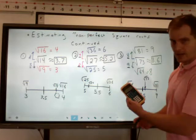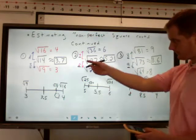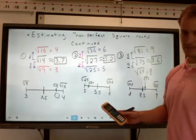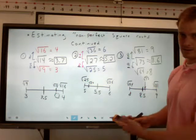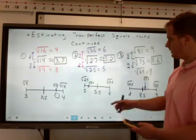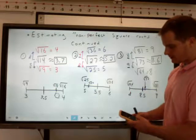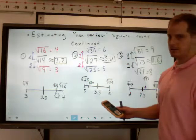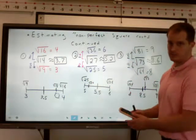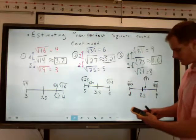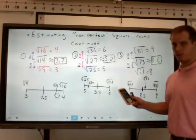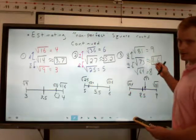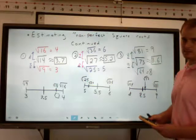If you were to use a calculator, the first problem, if you did the square root of 14, you get about 3.741. So, 3.7, or 3 and 7 tenths is good. For number 2, if you take the square root of 27, you get about 5.196. So, again, 5.2, or 5 and 2 tenths is reasonable. And lastly, the square root of 73, you actually end up with 8.544. So, again, something larger than 8 and 5 tenths, 8 and 6 tenths is reasonable.